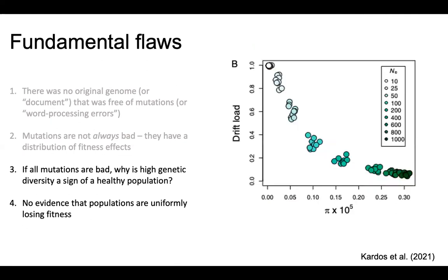A simulation study compared genetic diversity on the x-axis with drift load on the y-axis — the proportion of deleterious variants at high frequency that are actually depressing population fitness. When the population has low genetic diversity, it has very high drift load. When it has high genetic diversity, its drift load is much lower. This is the exact opposite of what genetic entropy predicts. Conservation genetics fundamentally rejects this concept, both empirically and in simulation.